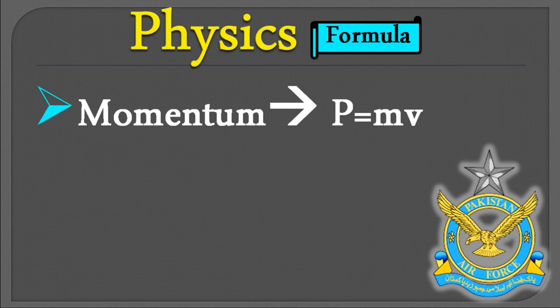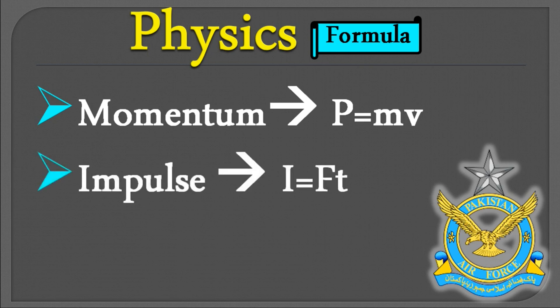Momentum اور Impulse — Impulse کا formula ہے I is equal to FT، یعنی force اور time کی cross product کو ہم impulse کہتے ہیں، اور یہی اس کی definition ہے۔